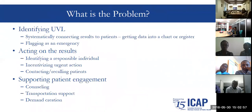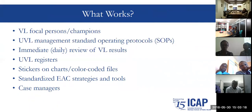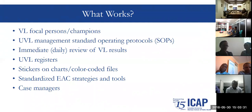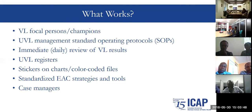It seems simple, but in busy clinics the reality is we have challenges identifying patients who have unsuppressed viral load, acting on the results, and supporting patient engagement. What do we know works? There are some studies and QI projects with early data. Some highlighted best practices include the use of viral load focal persons or champions, standard operating protocols for patients with unsuppressed viral load, rapid review of viral load results, the systematic use of unsuppressed viral load registers, and simple things like putting color-coded stickers or files on charts of patients with unsuppressed viral load.